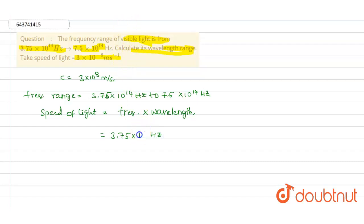We can write λ = c/ν, which equals 3×10^8 m/s divided by 3.75×10^14 Hz. After calculating, we get 8×10^-7 meters, which can be written as 8000 nanometers. This is the first part of the answer.